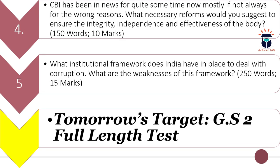The fourth question is: CBI has been in the news for quite some time now, mostly — if not always — for the wrong reasons. What necessary reforms would you suggest to ensure the integrity, independence and effectiveness of the body? So you have to highlight what necessary reforms could be taken to ensure that it remains integrity-bound, independent, and effective in discharging its duties. The word limit is 150 and the maximum marks are 10.